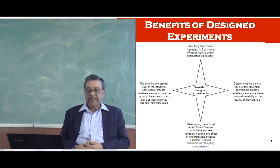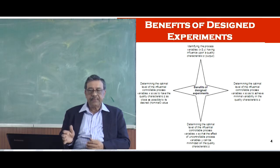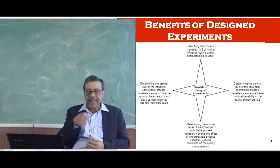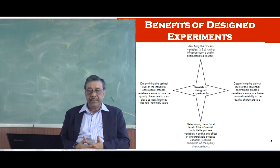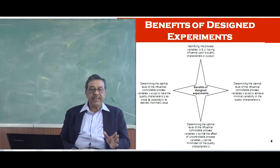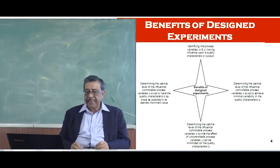The experiment that we are trying to do what are the benefits of that. Before we go into the actual experiment that we are conducting, we would like to talk about the benefits or why are we doing this experiment. If you look at what is written in the top of the slide it says that identifying process variables x and y, x is controllable variable y is uncontrolled variable having influence on a quality characteristic z. We are trying to identify which variable is having influence on the output. This is one of the aims of the experiment. We go to the 3 o'clock position, there we are seeing determining the optimal level of the influential controllable process variables x.